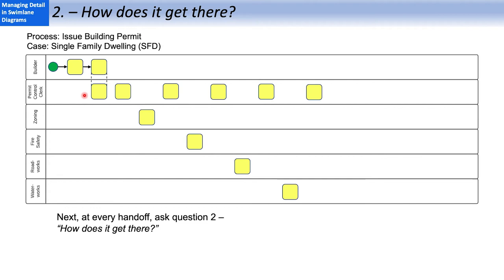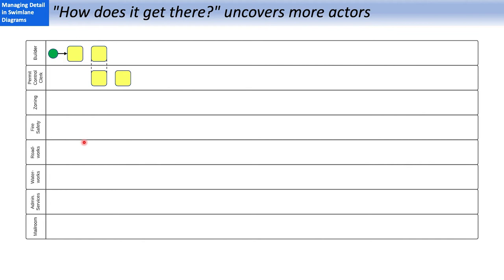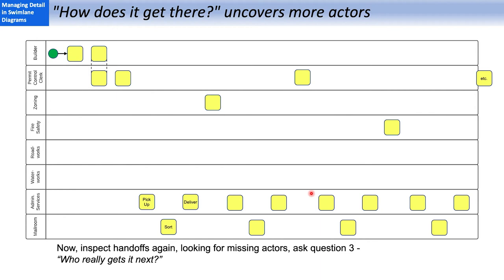The next question, how does it get there? Every time we have a movement, a flow between steps, especially at a handoff, we ask, how does it get there? It turned out this one here, it doesn't go directly from the permit control clerk to zoning. It has to be picked up by admin services from the permit control clerk's outbox, taken to the mail room for sorting, and then ultimately delivered. This step, how does it get there, almost always uncovers additional actors and therefore handoffs, which are a source of issues very frequently. How do we get to zoning? Well, first admin services picks up the application package, the mail room sorts it, admin delivers it, and then zoning has to get it back to the permit control clerk. Same cycle. They have to get it to fire safety. Same cycle again.